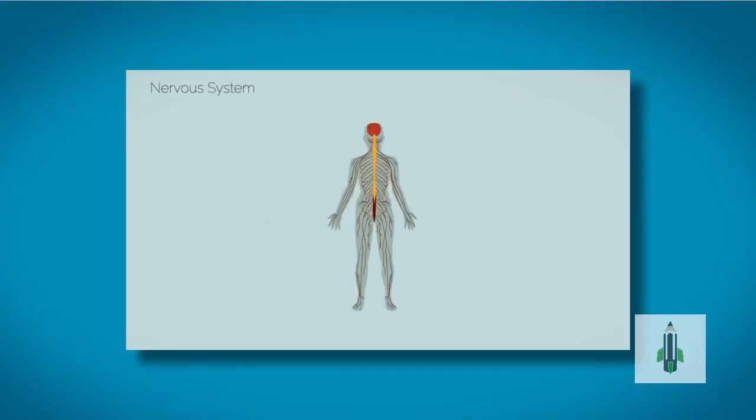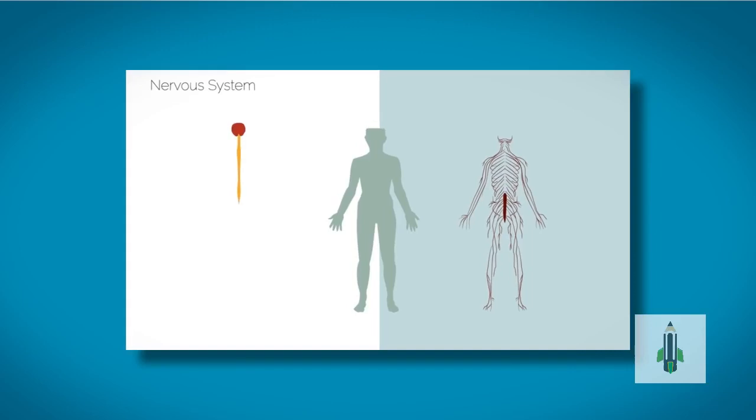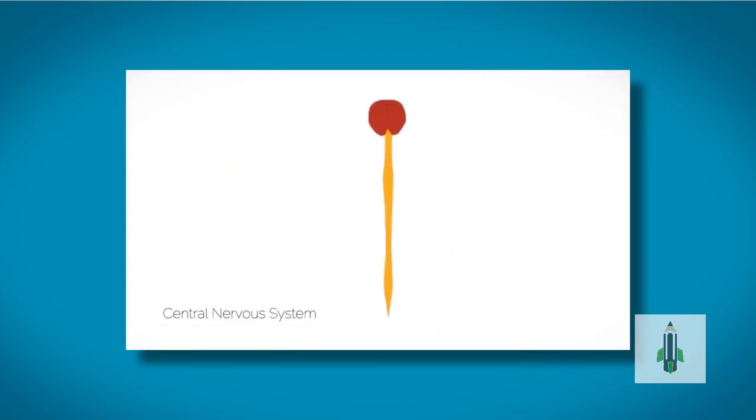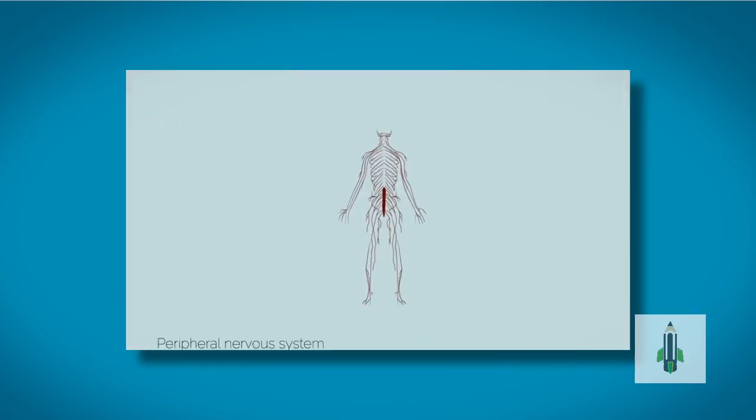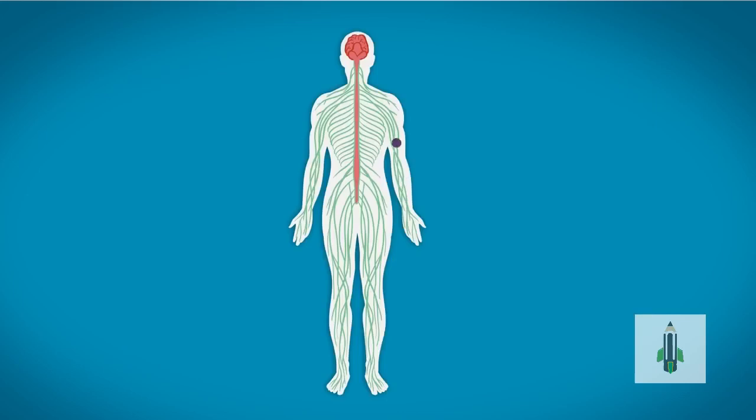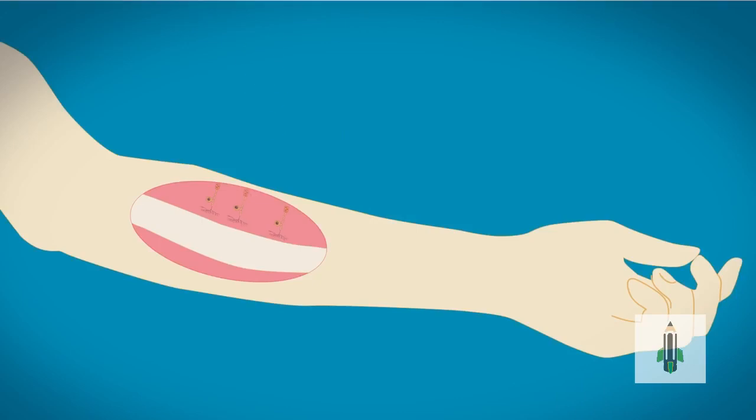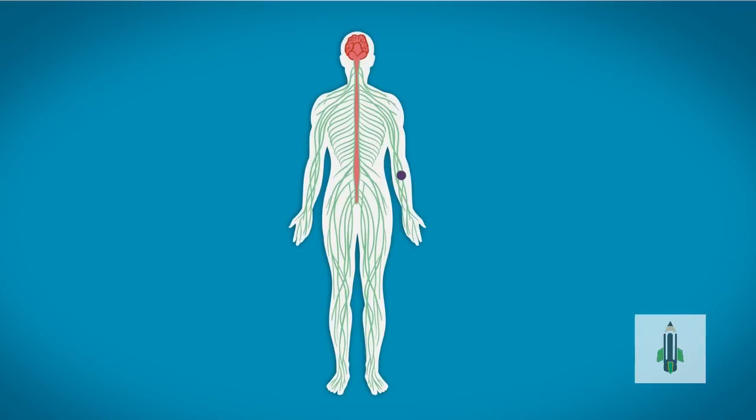From our introduction to the nervous system video, you should already know that the nervous system is essentially a massive, complex body-wide communication system. Messages are relayed to the central nervous system through sensory neurons. A stimulus is detected by a receptor which sends an electrical impulse message along a sensory neuron to the central nervous system.